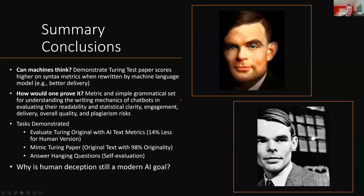Can machines think? We demonstrated a series of metrics. Our interest is more in how you would prove it. Chatbots do have higher readability, and you can prove statistically they can write more clearly than Alan Turing. The tasks we demonstrated are to recreate the original paper, answer some of his hanging questions, and pose the question to the community: why are we still chasing human deception as a modern AI goal? Thank you for your attention.